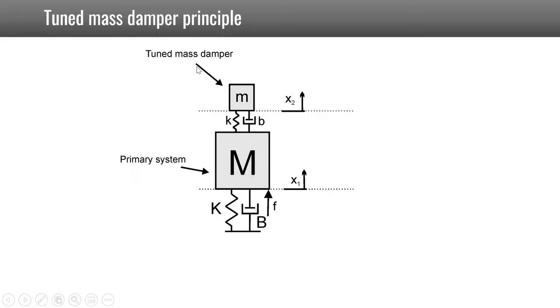We introduce different parameters. The first one is the mass ratio, the ratio between the mass of the TMD and the primary system. We also have the natural frequency of the tuned mass damper, square root of k over m, the natural frequency of the primary system, square root of capital K over M, and the ratio of the two, nu equals omega n divided by capital Omega.